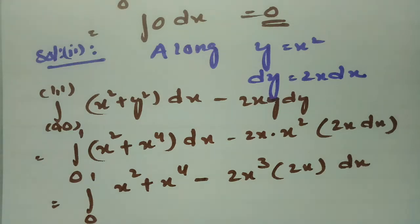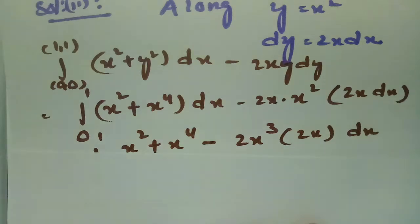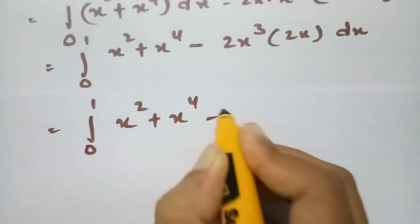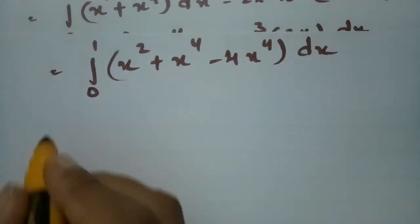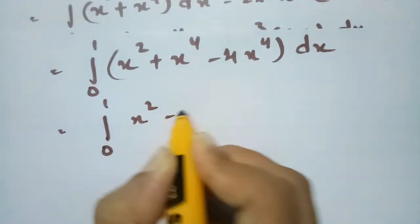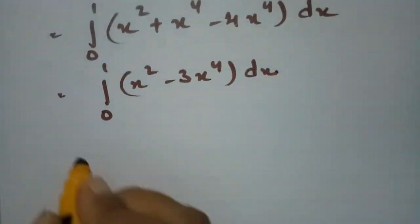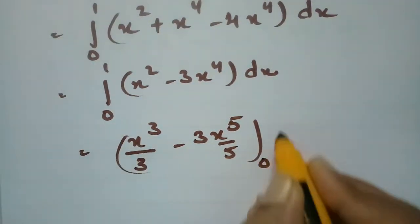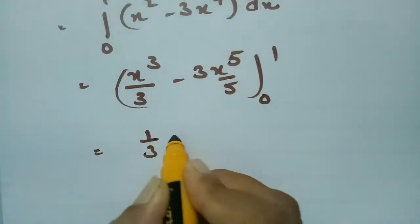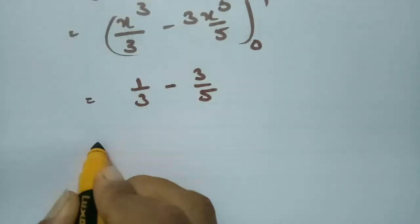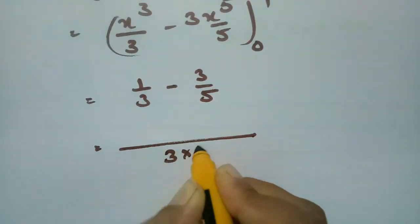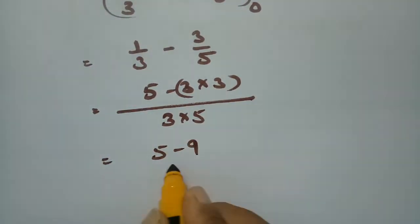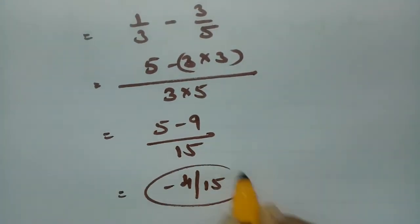If I multiply, this will be x² + x⁴ minus 4x⁴, giving integral 0 to 1 of (x² minus 3x⁴)dx. Integrating: x³/3 minus 3·x⁵/5, evaluated from 0 to 1. Substituting x = 1: 1/3 minus 3/5. The LCM is 15, so this is 5 minus 9 over 15, which gives minus 4/15 as the required answer.